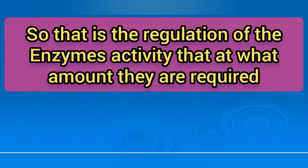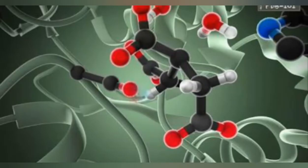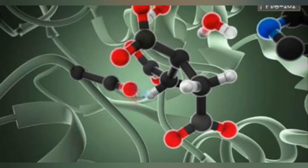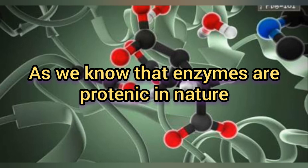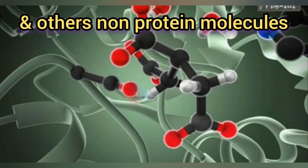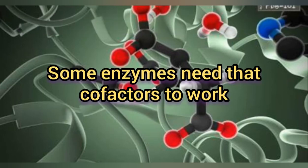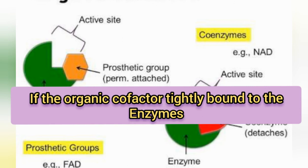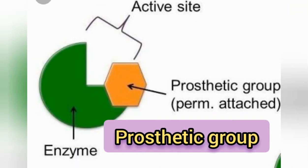Some enzymes need additional components to work. Since enzymes are proteinic in nature, the other non-protein molecules or ions are known as cofactors. Some enzymes need cofactors to function. There are inorganic cofactors — such as metal ions — and organic cofactors such as flavin and heme. If an organic cofactor is tightly bound to the enzyme, it is known as a prosthetic group.